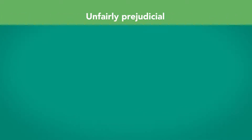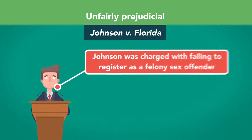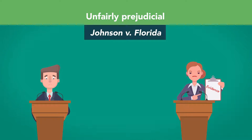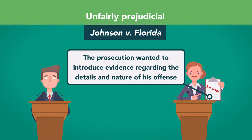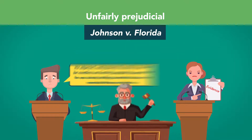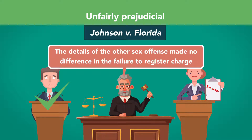Another reason relevant evidence may be excluded is because it's unfairly prejudicial. In Johnson v. Florida, Johnson was charged with failing to register as a felony sex offender. Johnson admitted to being convicted as a felony sex offender, but the prosecution wanted to introduce evidence regarding the details and nature of his offense. He objected, noting that this evidence would be needless and unfairly prejudicial, given that he was already willing to admit that he was a convicted felony sex offender. The court agreed with the defense, noting that the details of the other sex offense made no difference in the failure to register charge. Therefore, the court excluded the evidence regarding the details of Johnson's previous offense.